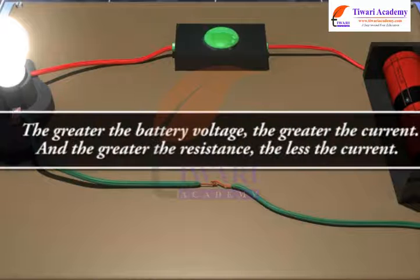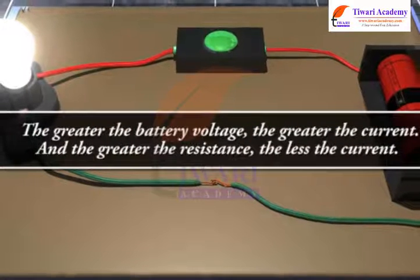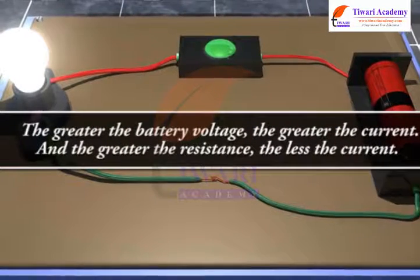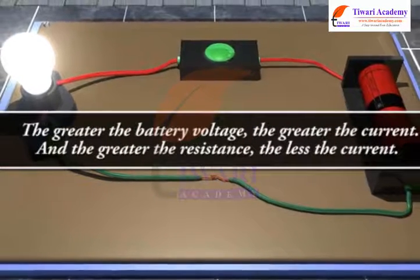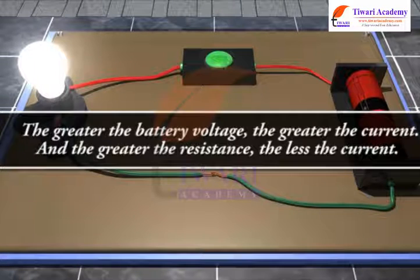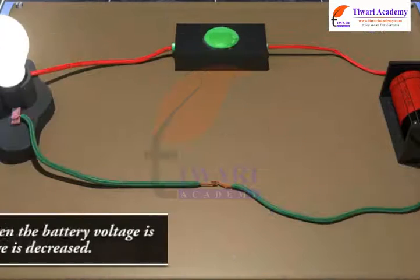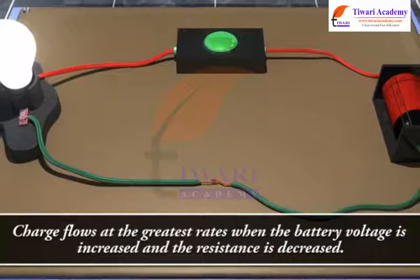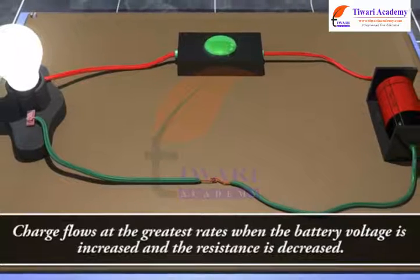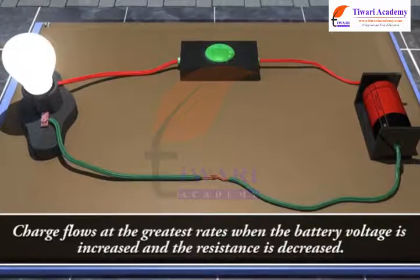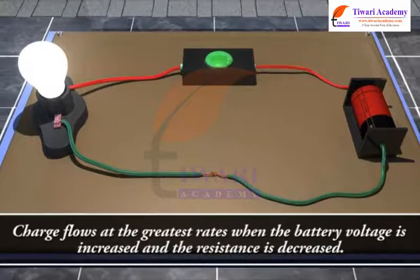The greater the battery voltage, the greater the current, and the greater the resistance, the less the current. Charge flows at the greatest rates when the battery voltage is increased and the resistance is decreased.